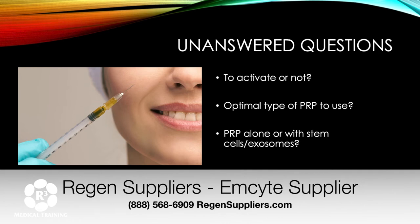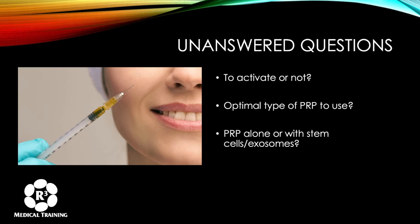There are still open questions even after extensive research: should you activate it or not? What's the optimal type of PRP — leukocyte rich with one spin, or leukocyte poor with a second spin? Should you use PRP by itself or combined with stem cells and/or exosomes? There is currently no gold standard.